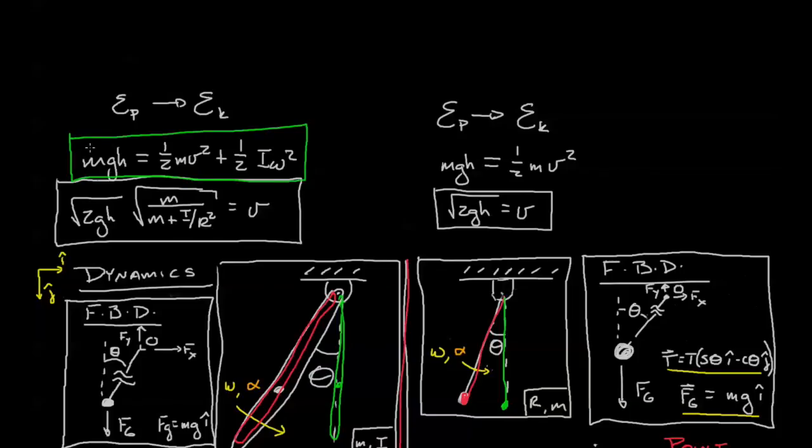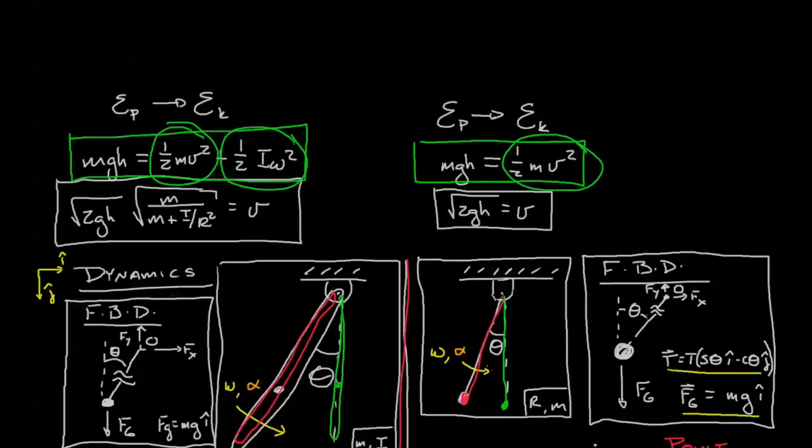Let's go back up here. The potential energy in the case of the rigid body pendulum goes to both the movement of the center of mass as well as rotational kinetic energy. However, in the point mass pendulum, all of the energy goes to the velocity of the center of mass, which means the velocity of the center of mass can get much bigger. Hence, bigger acceleration, faster angular velocity.